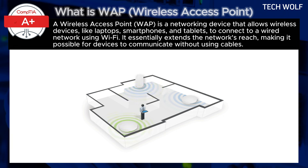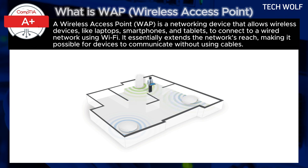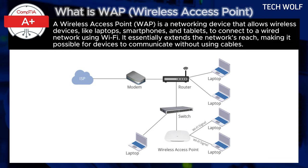For example, when an employee with a laptop enters the building and connects to the office Wi-Fi, their device communicates with the closest wireless access point. The wireless access point takes the data from the laptop, sends it over the wired network through the switch or router, and routes it to its intended destination — whether it's a server or the internet. The same wireless access point will receive data sent back to the laptop, enabling seamless wireless communication.